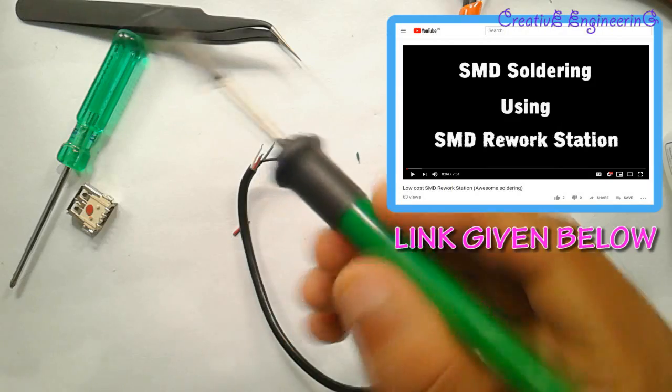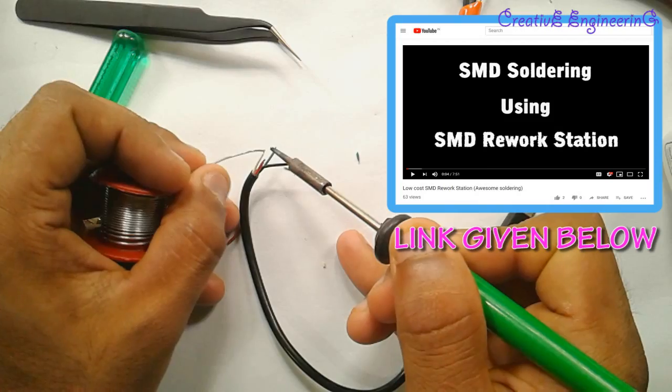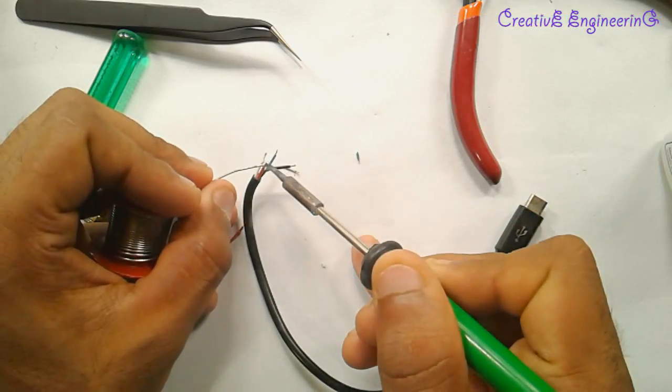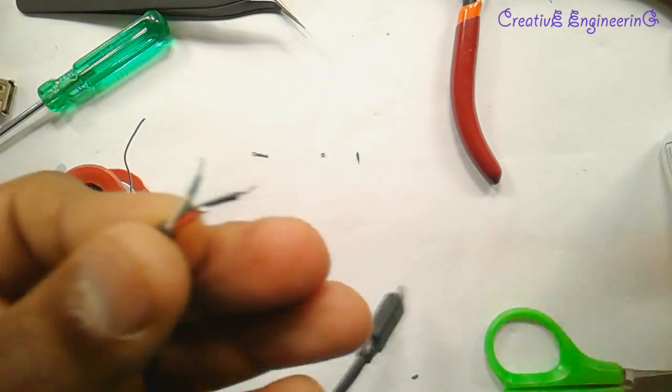Now it is time for soldering. For the soldering I use a micro soldering. Here first apply some solder to the wire tips. This is a simple soldering mark. This is easily done by anyone which does not know the electronics.